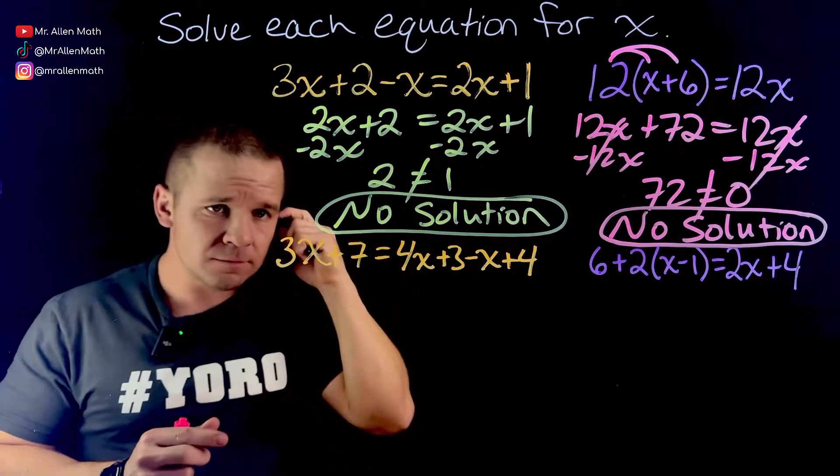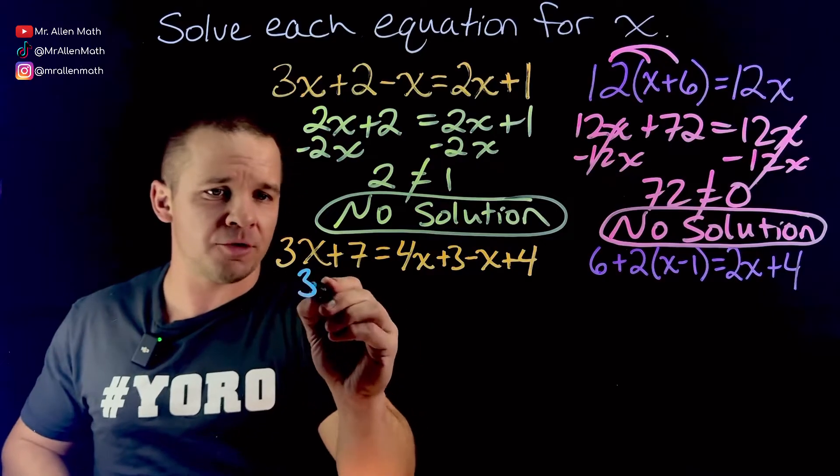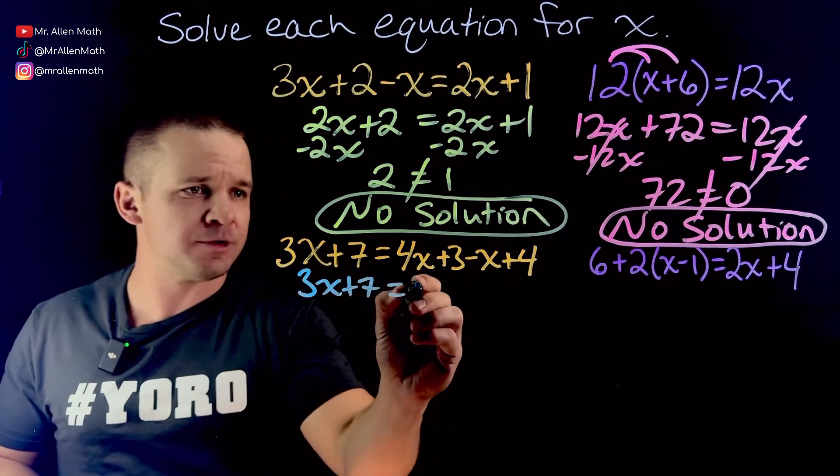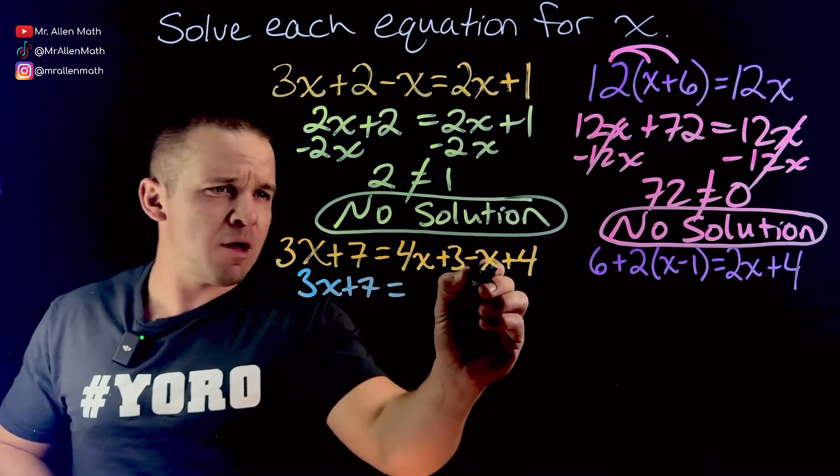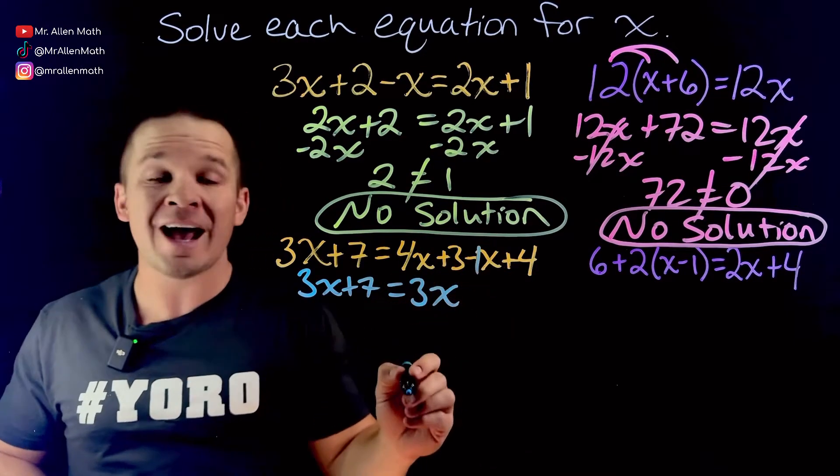All right, next one here. We've got 3x plus 7, nothing to do on this side. Over here, we got a little cleaning up to do. So I'm gonna go 3x plus 7 equals, we got 4x minus x. So that's gonna be, what, 3x. That's like a negative 1x there, 4x, negative 1x, adds to 3x.